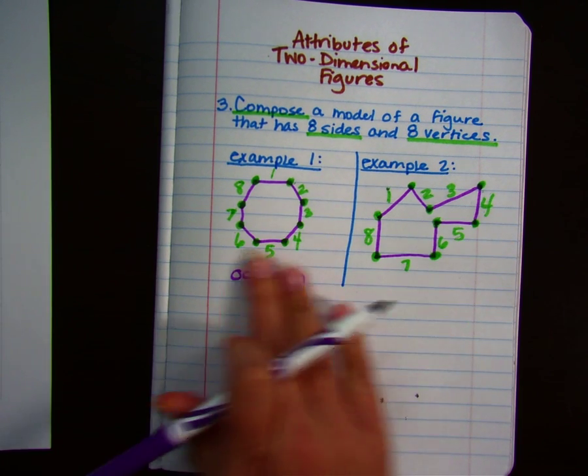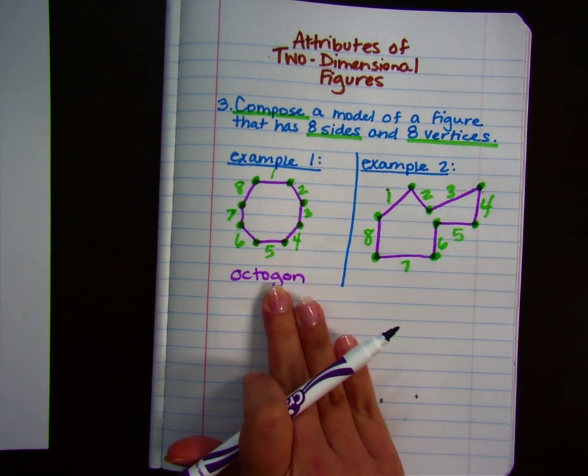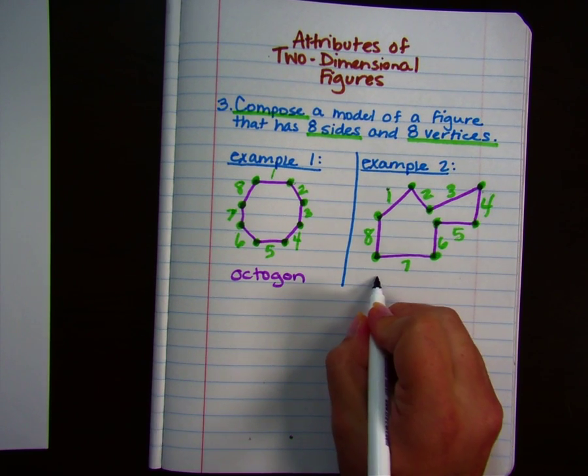They don't look the same, but they both have eight sides and eight vertices, so this one is called an octagon.